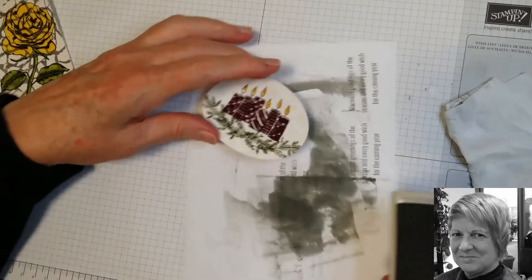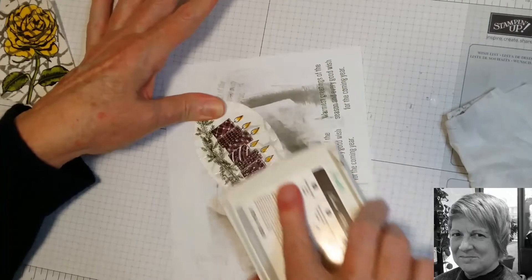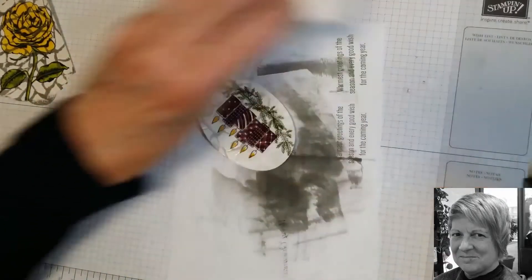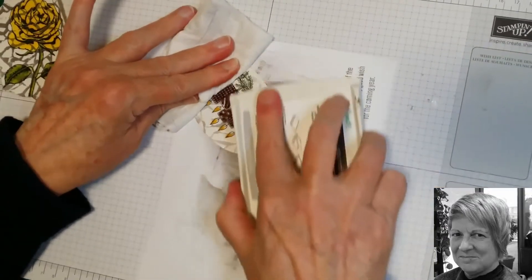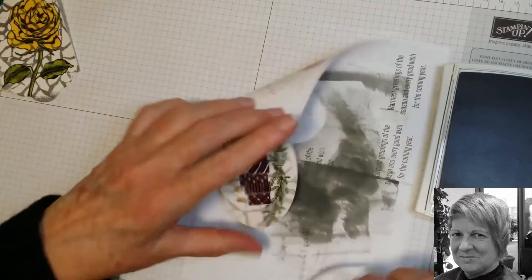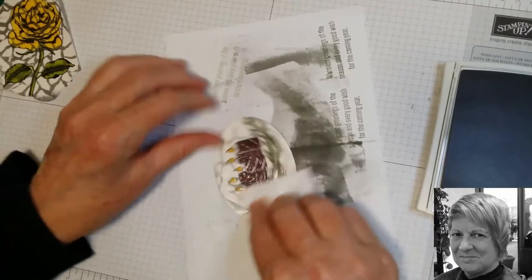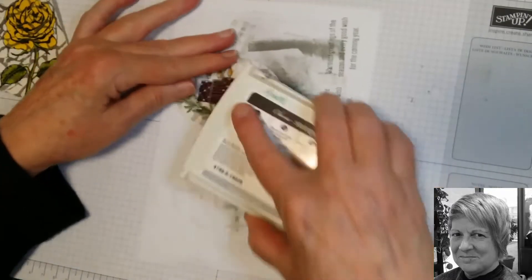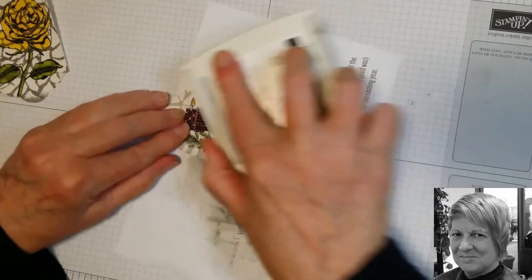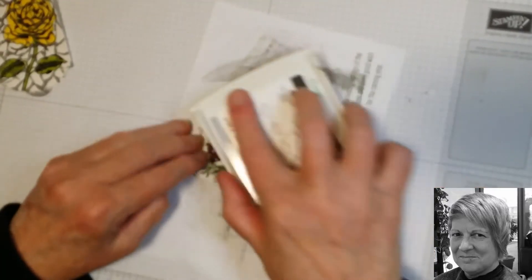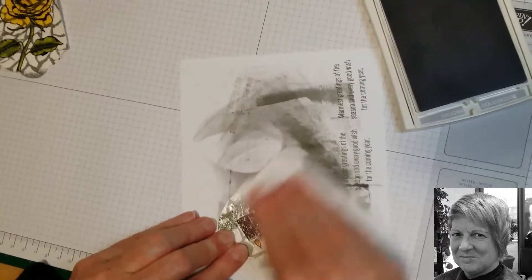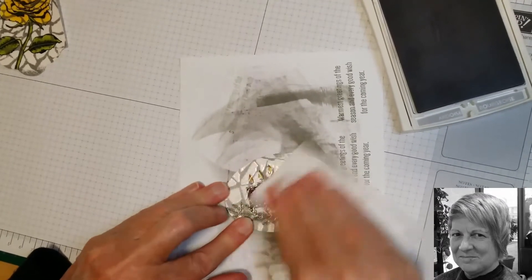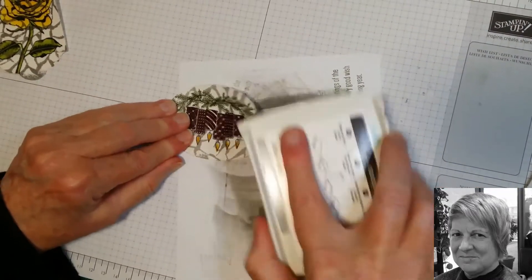Again we'll just use the Smoky Slate ink. It's a bit tricky when you've got the small pieces. You can do it on a larger piece and then just die cut it when you're finished if you want. I just thought for the purposes of this it might be easier if I had it already die cut.